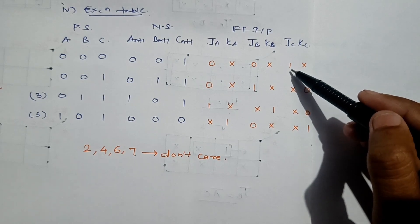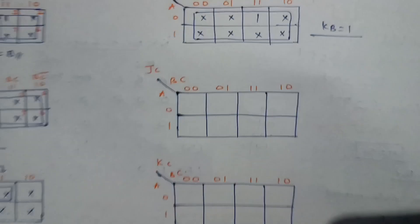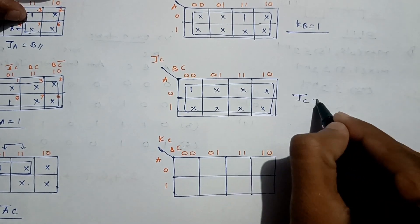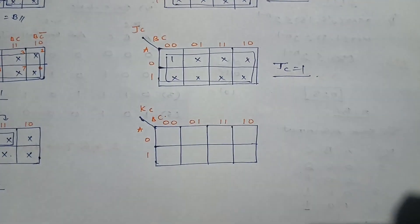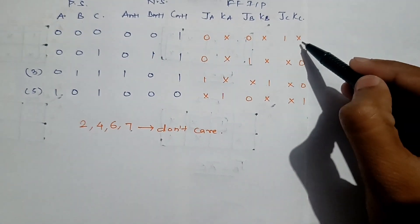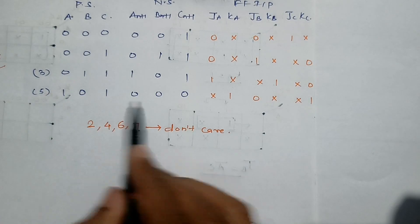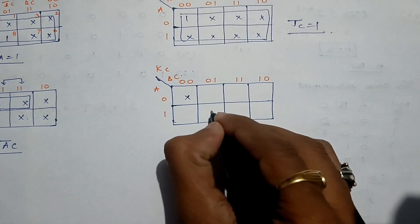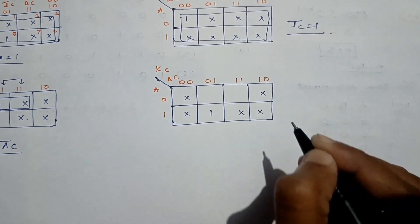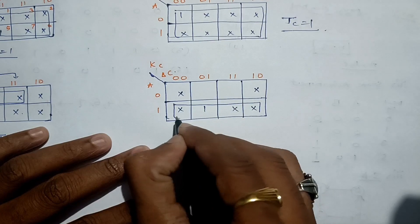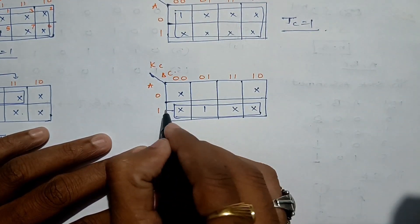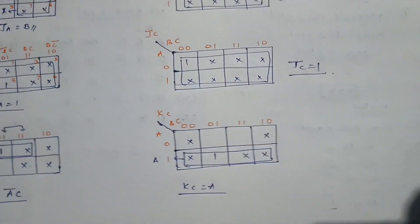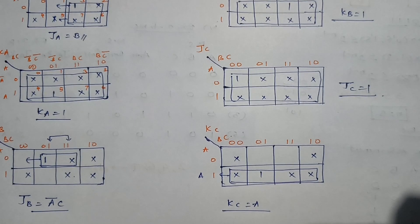For JC: state 0 gives 1 and remaining states are don't care, so we form an octet giving JC = 1. For KC: state 0 is don't care, state 5 gives 1, and 2, 4, 6, 7 are don't care. Grouping these four cells into a quad, with A being 1 and the others collapsing, KC = A.